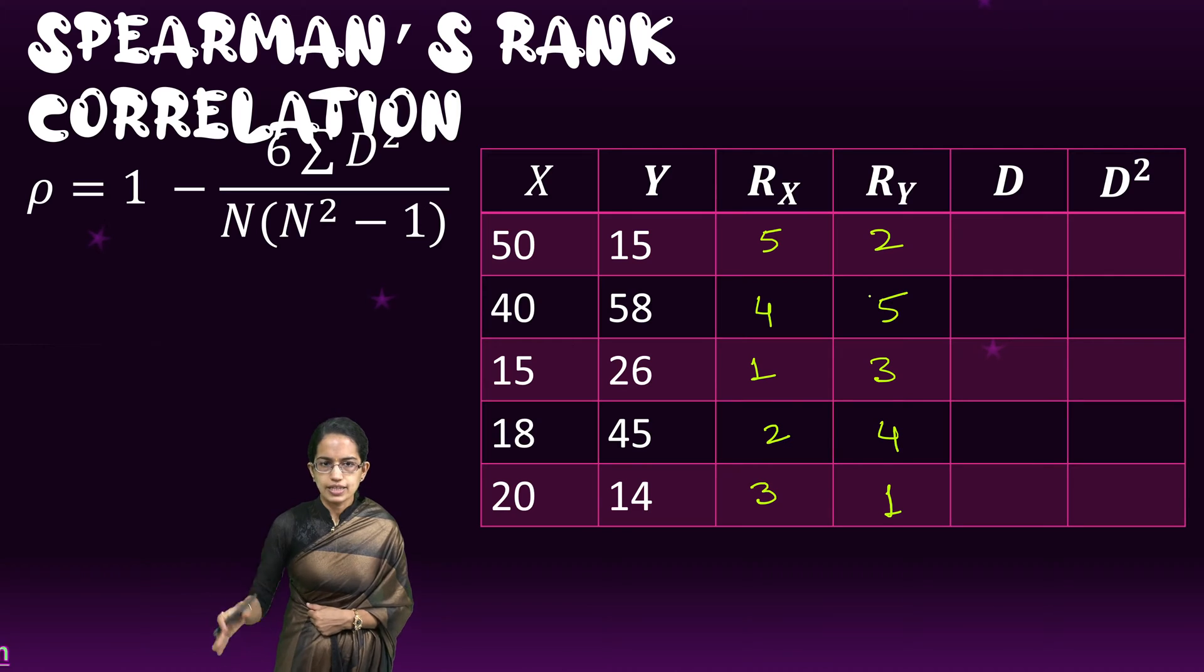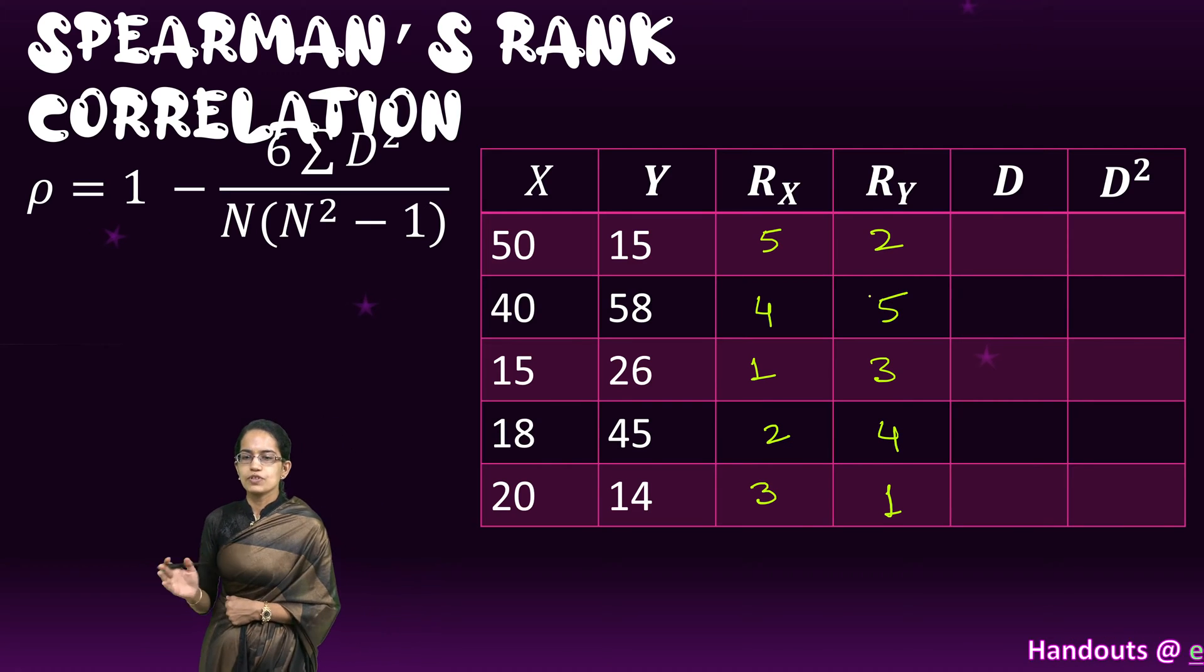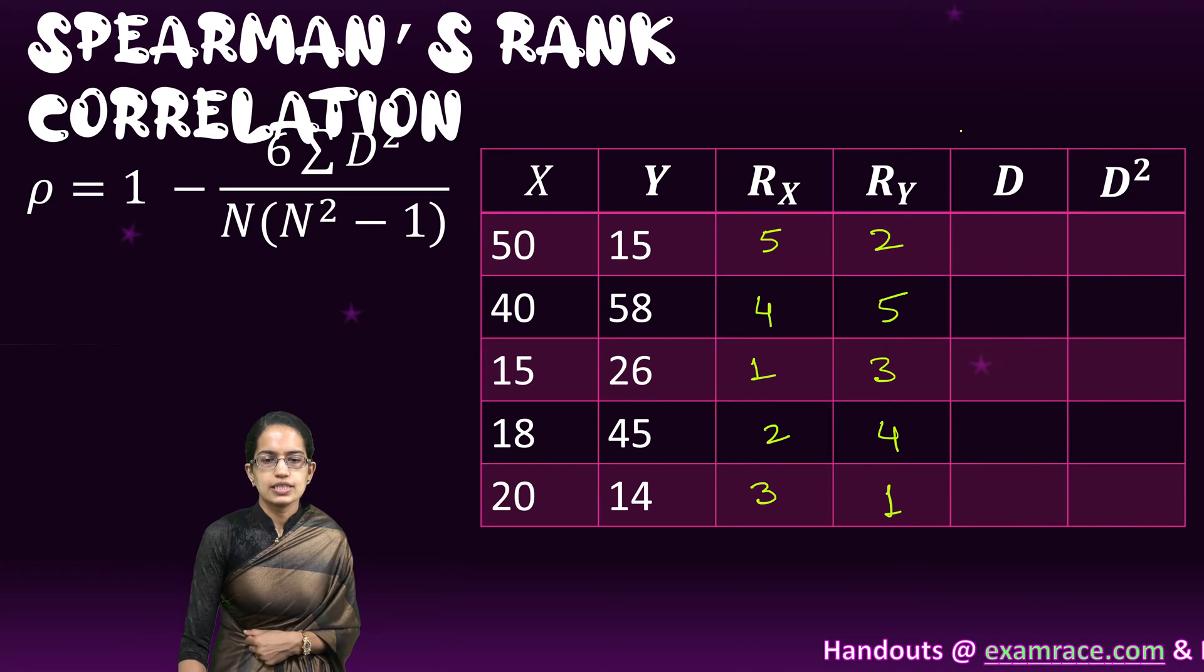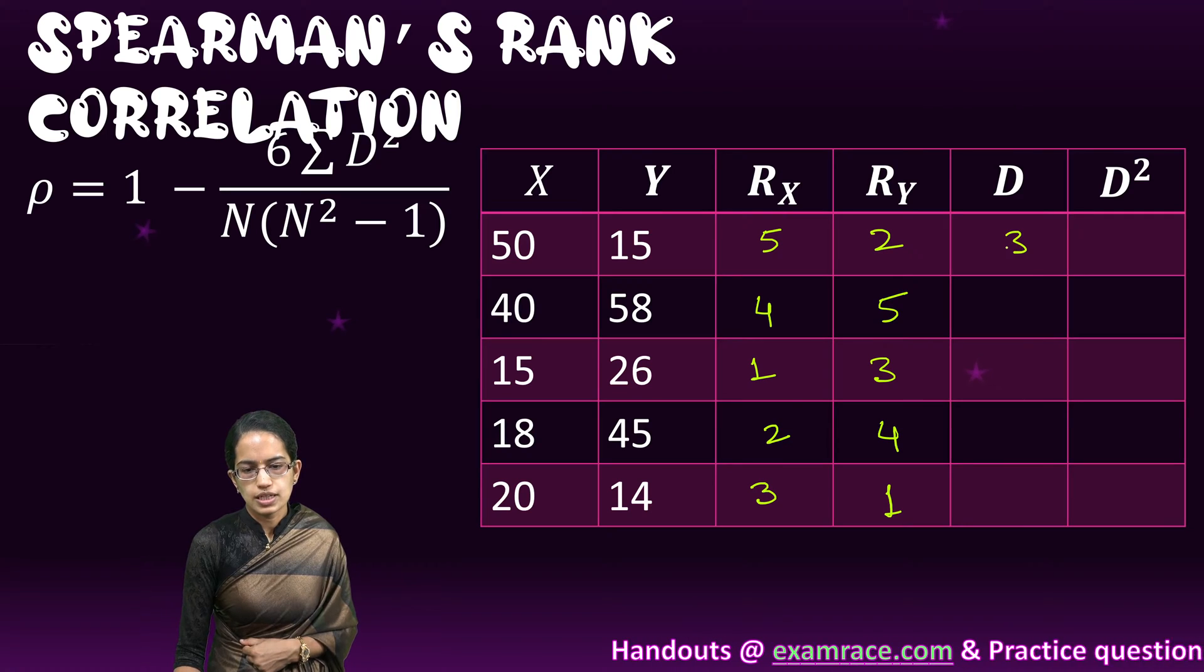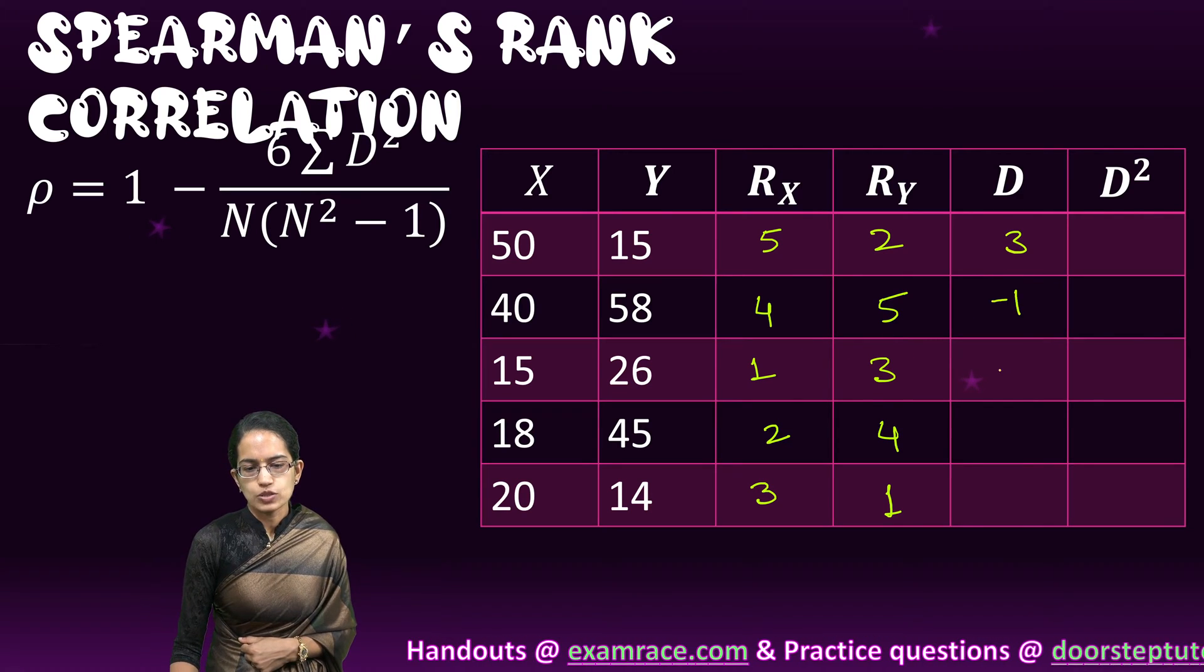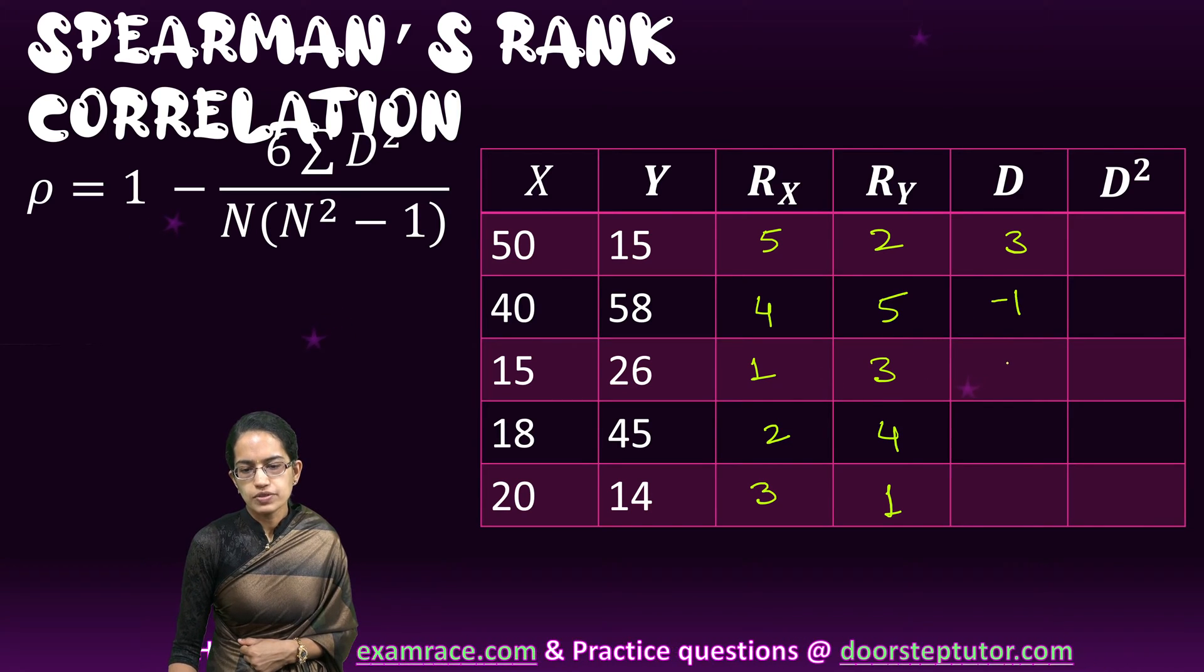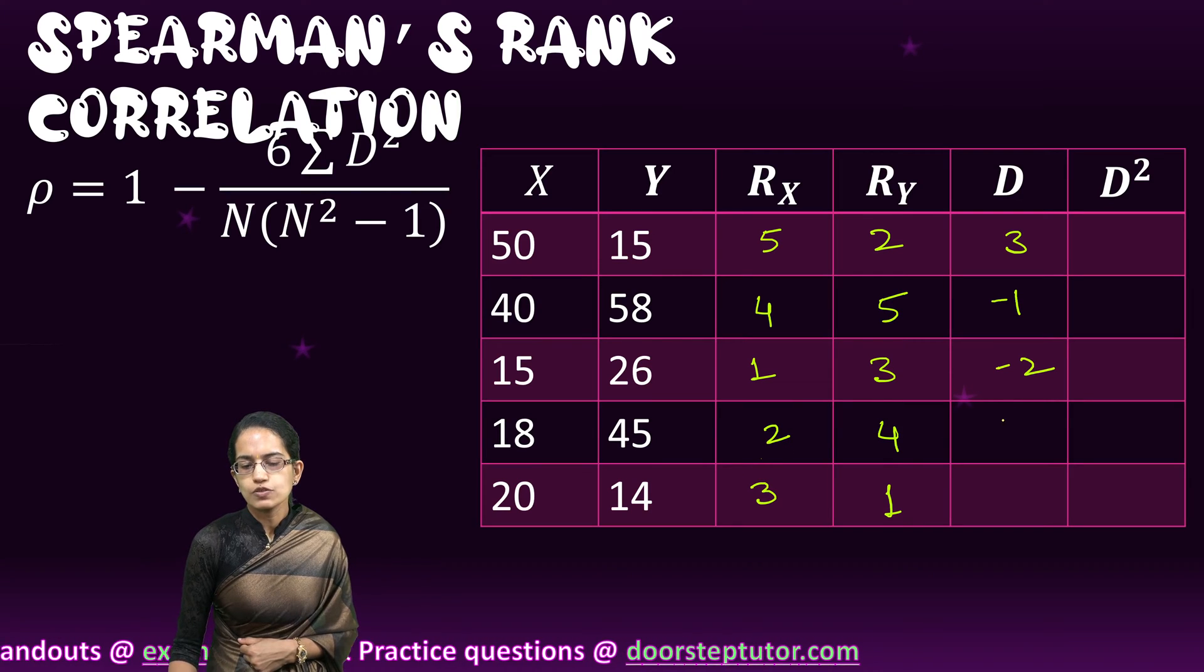Now I have written the ranks. What I do is I take the difference of the ranks. In this case, it is 5 minus 2, which is 3. Then 4 minus 5 is minus 1. 1 minus 3, which is minus 2. 2 minus 4, which is minus 2. And 3 minus 1, which is 2.